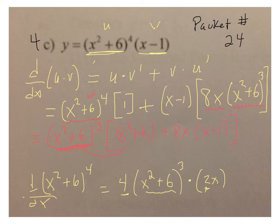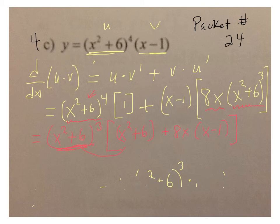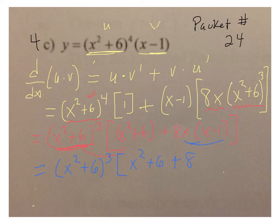So I'm going to erase this bottom part. And then, a little bit more algebra inside. I have x squared plus 6 to the 3rd, and then I have an x squared plus 6, and then if I distribute, I'd have an 8x squared minus 8x, and x squared plus 6 to the 3rd, times that would be 9x squared.